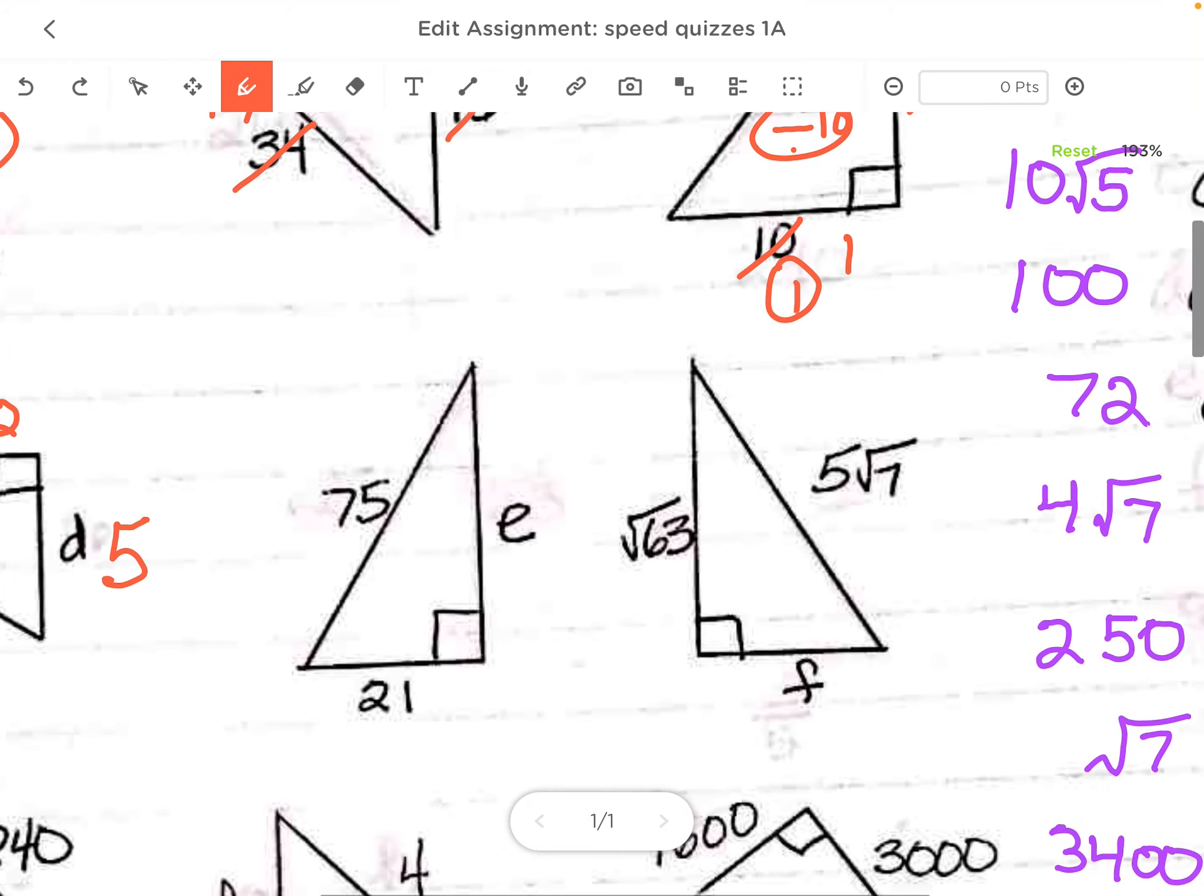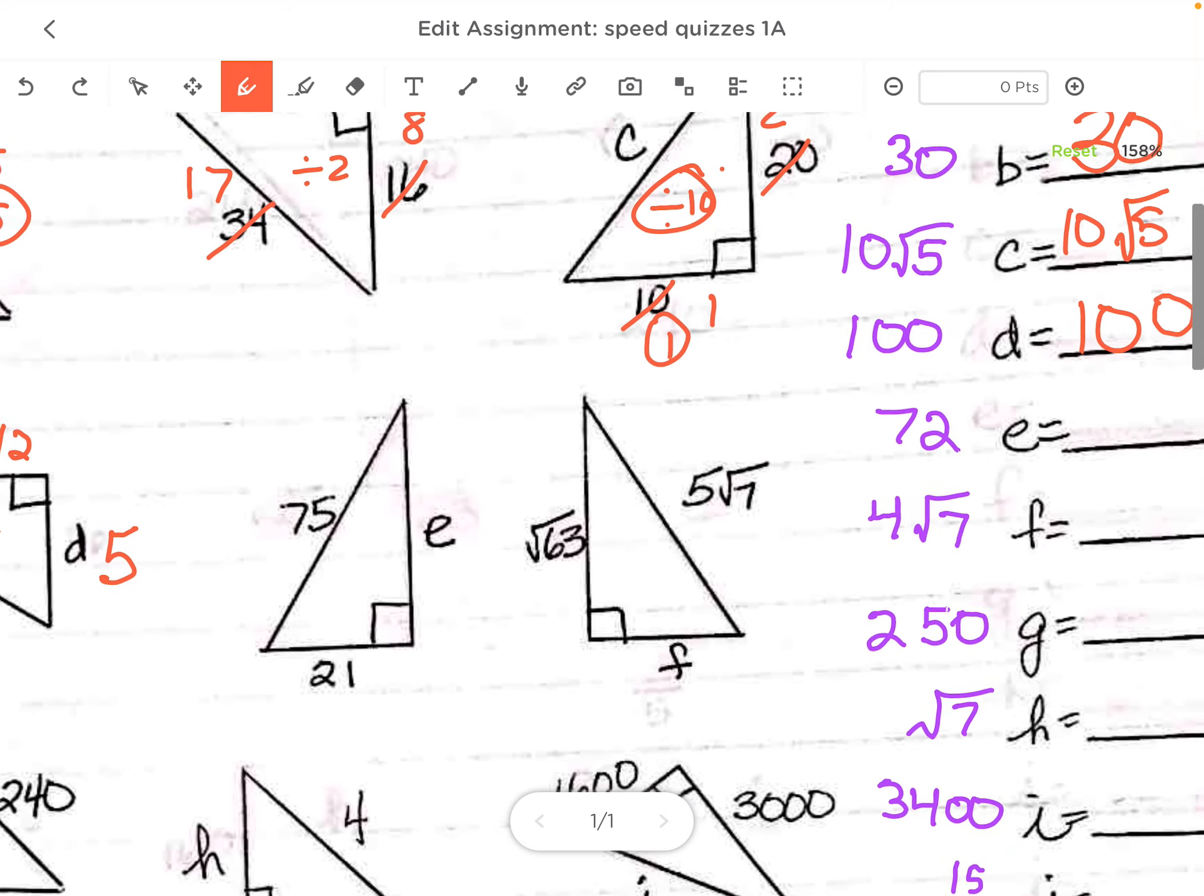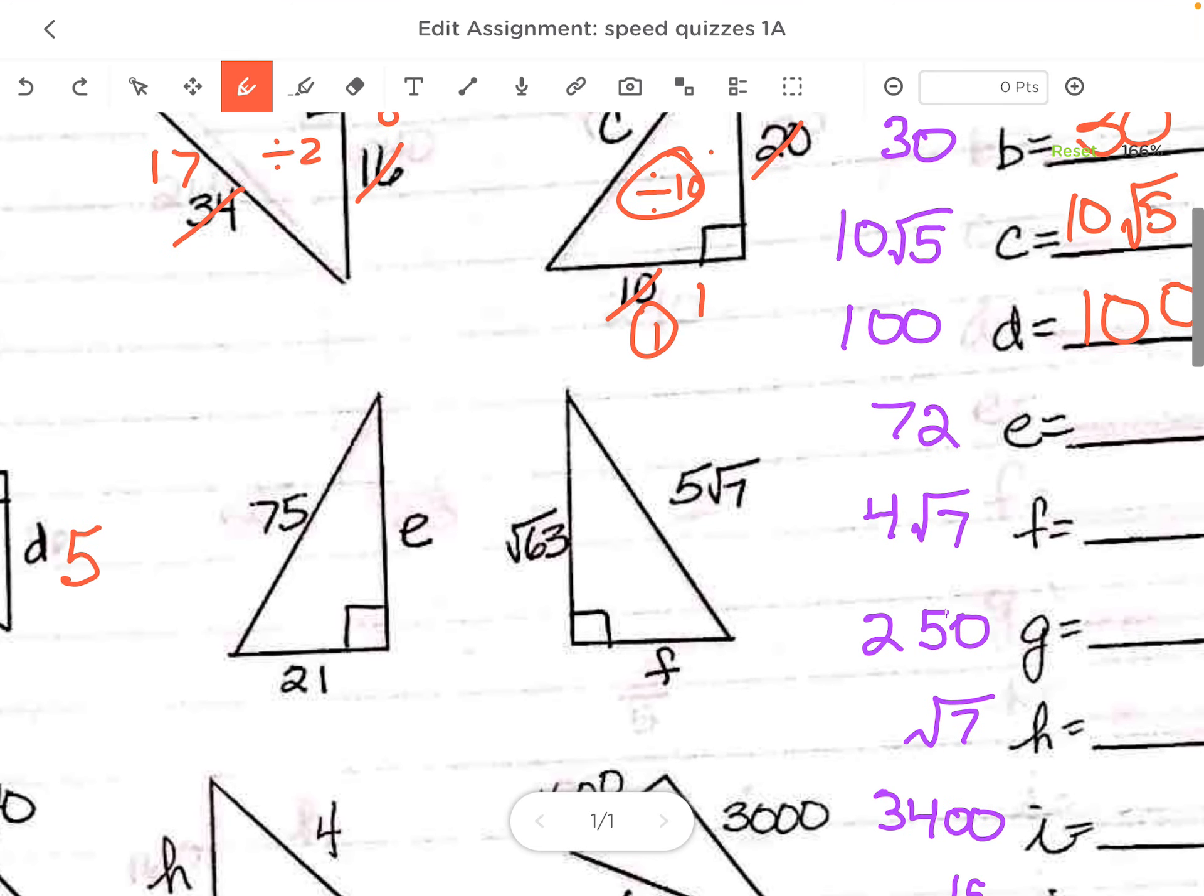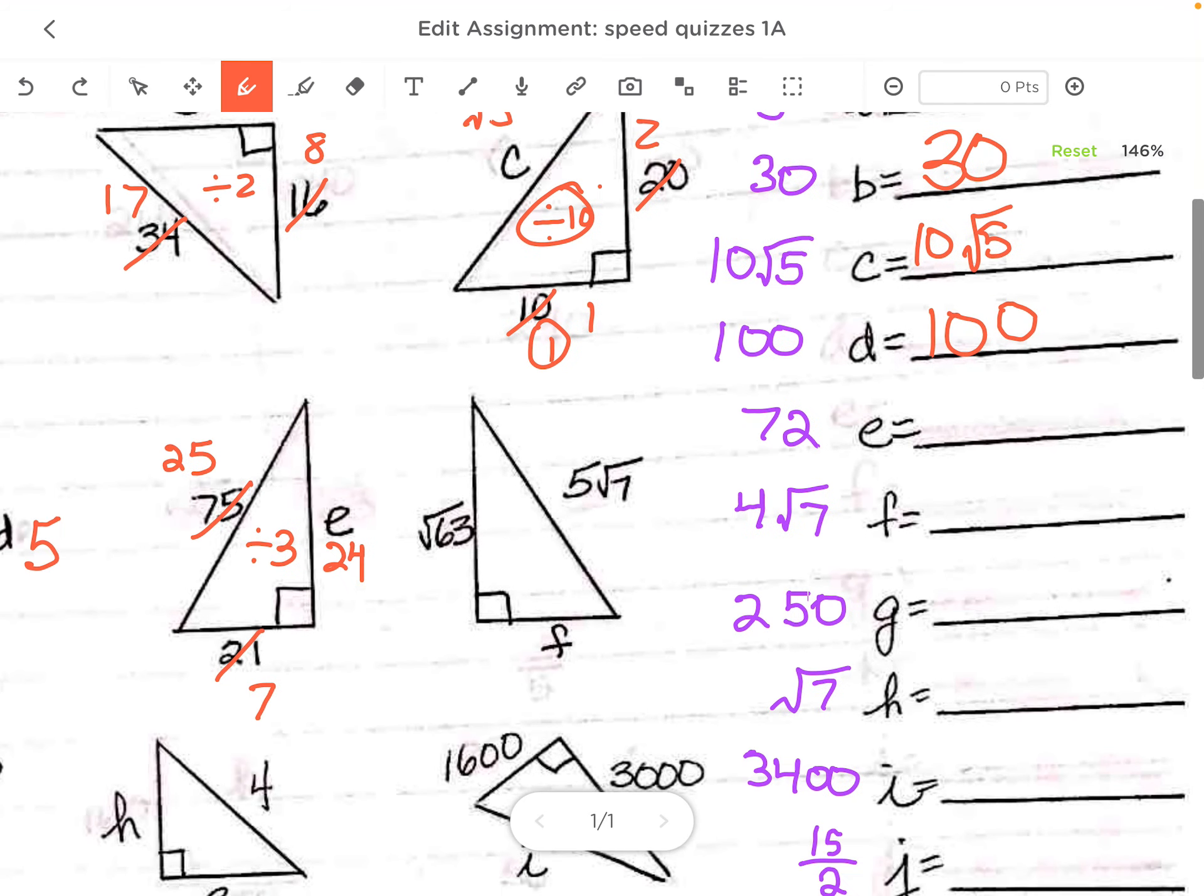Looking at E, this next one. For E, it looks like I can divide these by 3. So I'm getting 25, 7. And then again, it's a 7, 24, 25. But the answer is not 24. You have to multiply by 3. So in my head, I would do 25 times 3. And then you have to take one 3 away to get you 72.